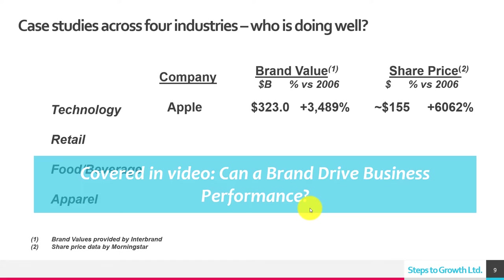Apple's brand value has gone up three and a half thousand percent since 2006. Their share price has gone up six thousand percent since 2006. Obviously that's not all because of the brand, but the next video — 'Can a brand drive business performance?' — will show there is some linkage. You do need a good brand to help sell products. They do stock splits over time, which is why the share price figure is $155.